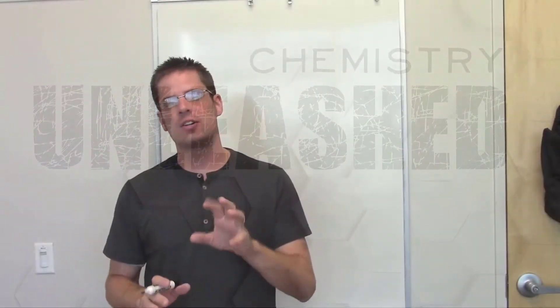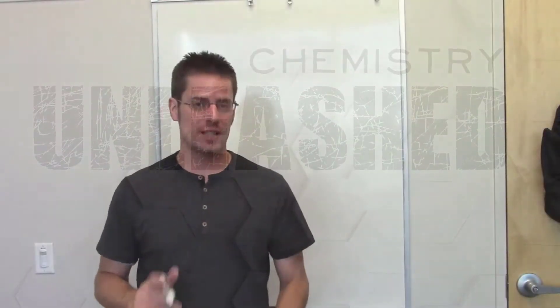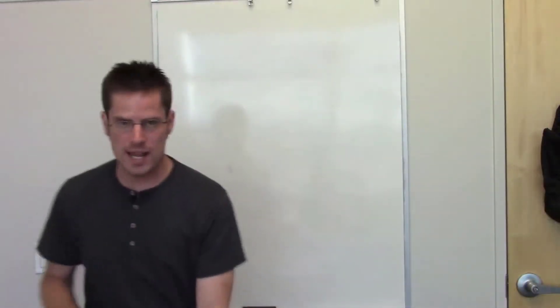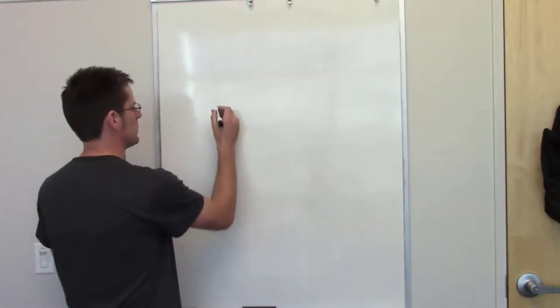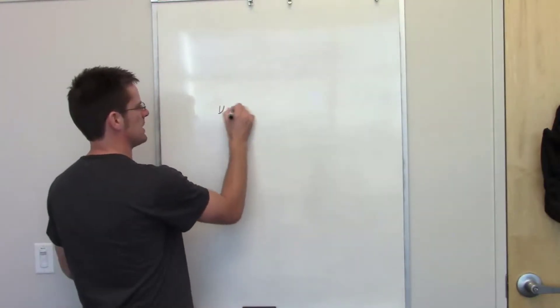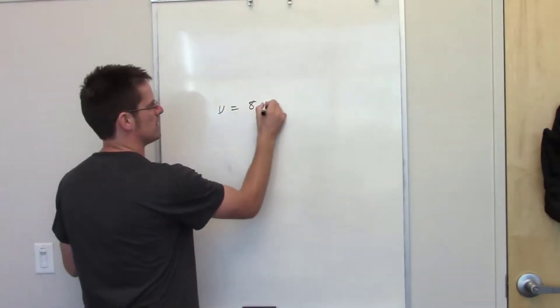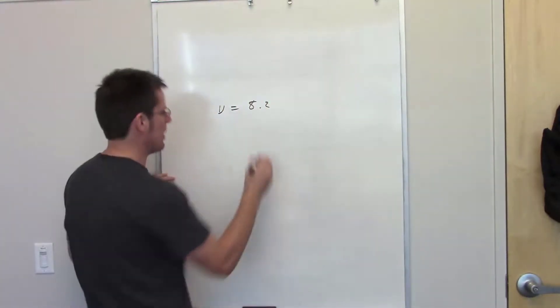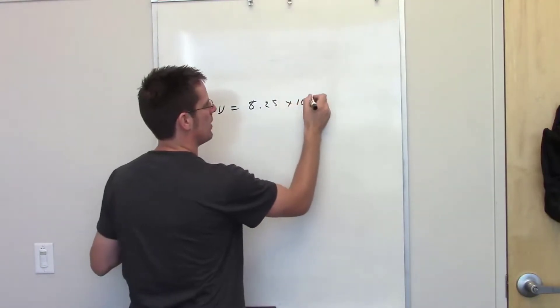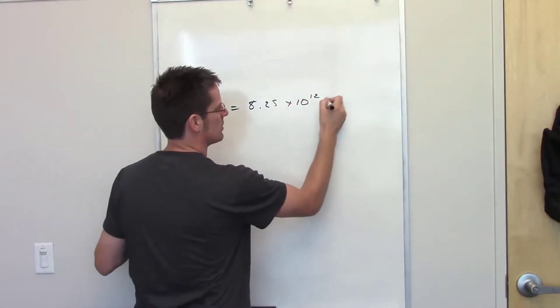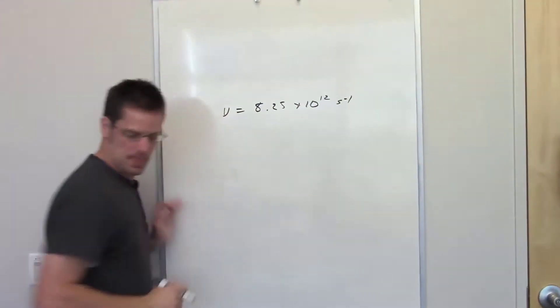In this first question, we're asked to calculate the energy of a photon whose electromagnetic radiation has the following frequency: frequency equals 8.25 times 10 to the 12th inverse seconds.